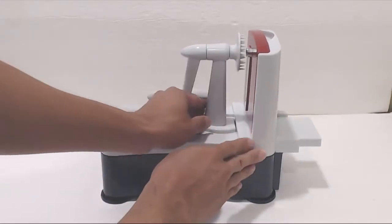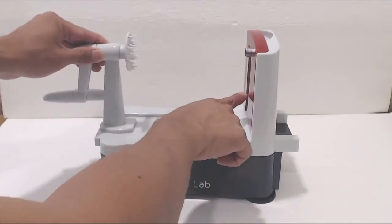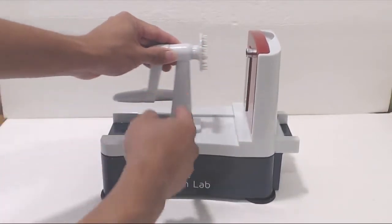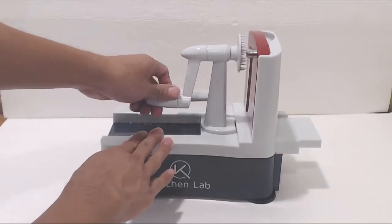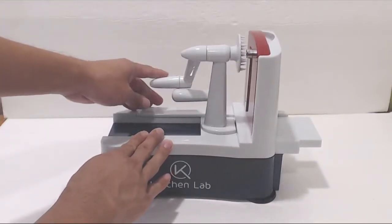It slides along a track so you can continuously feed your produce into the cutting blade. You don't have to worry about the spikes of the presser plate going into the blade, because the plate will stop sliding before it gets too close.